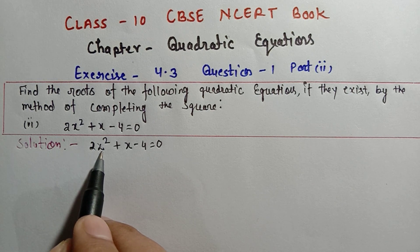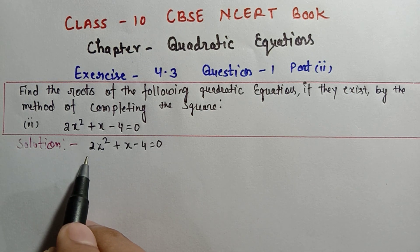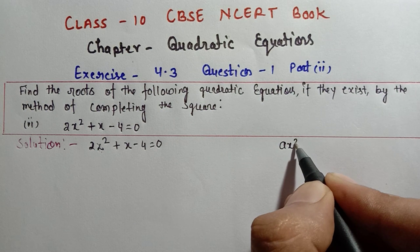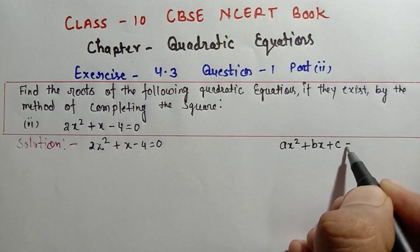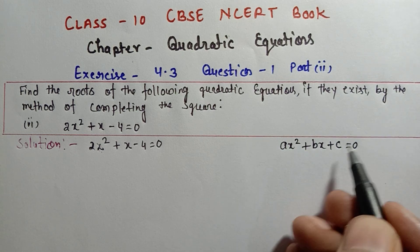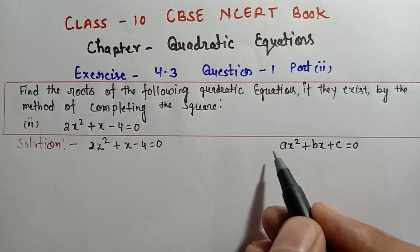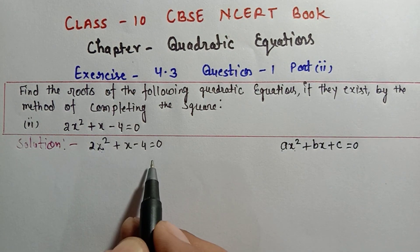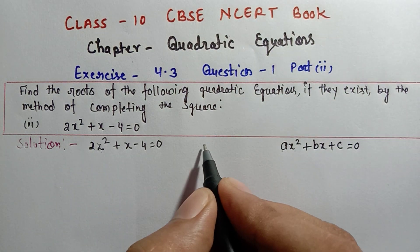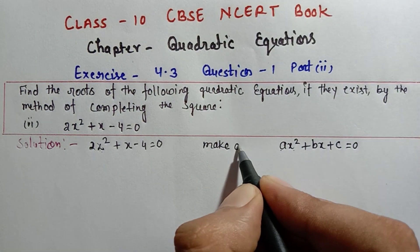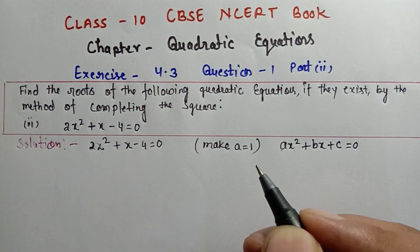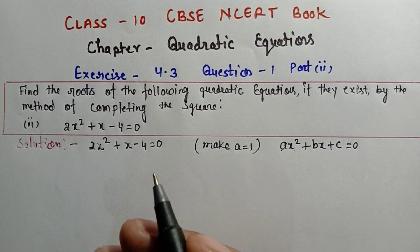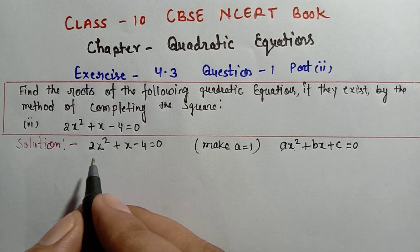The general form of a quadratic equation is ax² + bx + c = 0. In completing the square, the first step is to make the coefficient of x² equal to 1, i.e., make a = 1. Here a = 2, so we will divide the complete equation by 2.